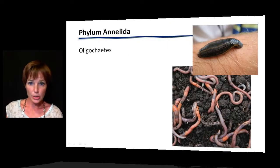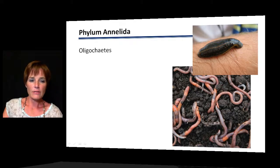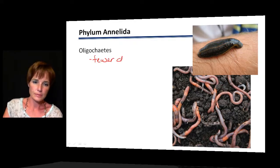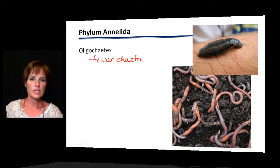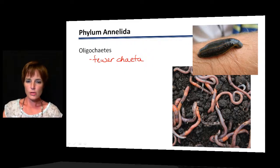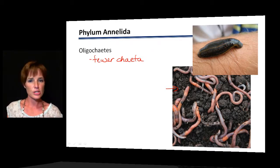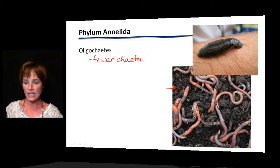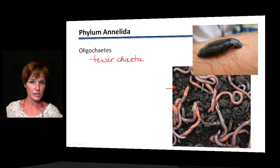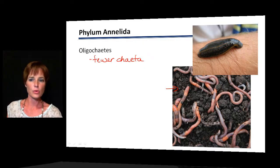The other group is the oligochaetes, represented by earthworms and leeches. These have far fewer chaetae, so they appear much smoother. Earthworms are known for burrowing in the earth. Leeches are parasitic — they attach to an organism, use small teeth to cut a slit in the skin, secrete an anesthetic, and then suck blood from the host.